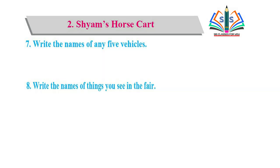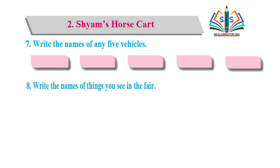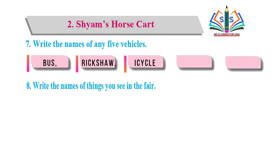7th question is: write the name of any 5 vehicles. ہمیں 5 vehicles کے نام لکھنے ہیں - 5 vehicles جو ہم لوگوں کو road پر دیکھائی دیتی ہیں، کون کون سی vehicles ہیں: bus, rickshaw, bicycle, truck, and scooter.